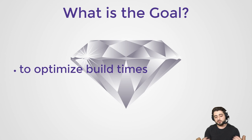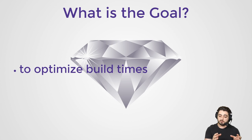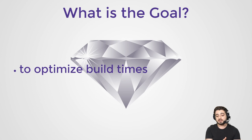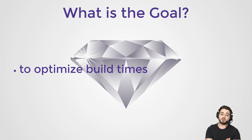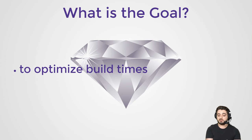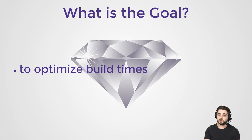What is the goal of an architecture? I'll be honest that I don't really know, but I do know what the goal of the diamond architecture is: to optimize build times. I want to have the fastest build times possible, and I mean this in the most technology-agnostic way. For statically typed languages like Scala, I'm talking about compile times. For dynamically typed languages like JavaScript, we're talking about build times. I'll use these words interchangeably.